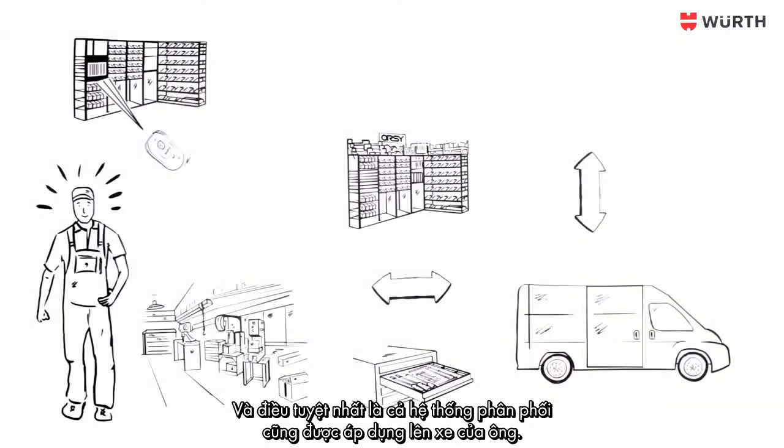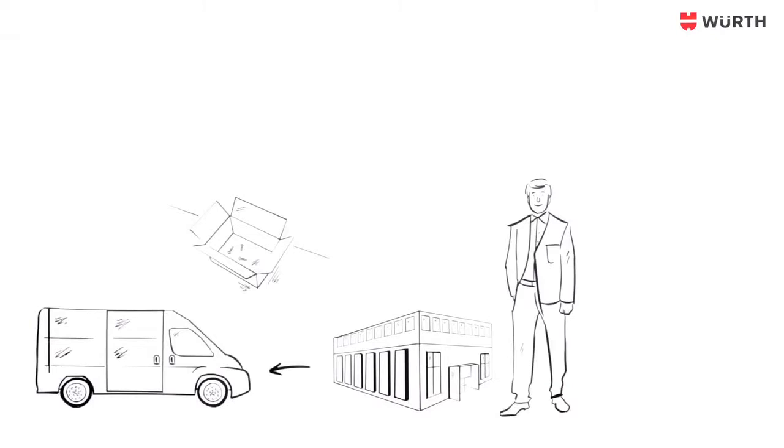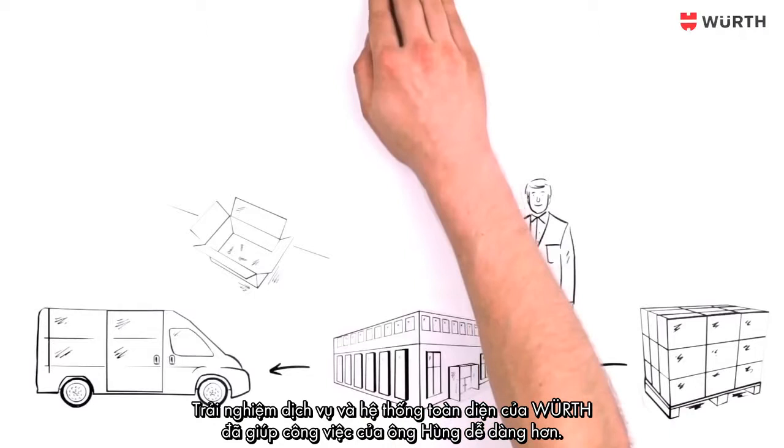If expendable items are used up, his seller or his branch keep supplies coming without delay. Everything fits together. The experience and the complete system of Wörth makes his day-to-day work a little easier.